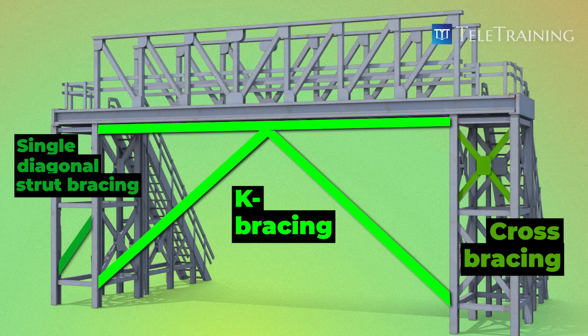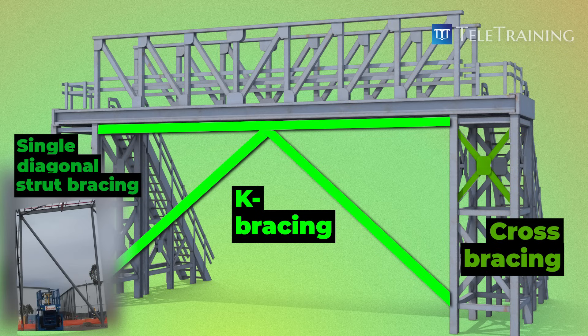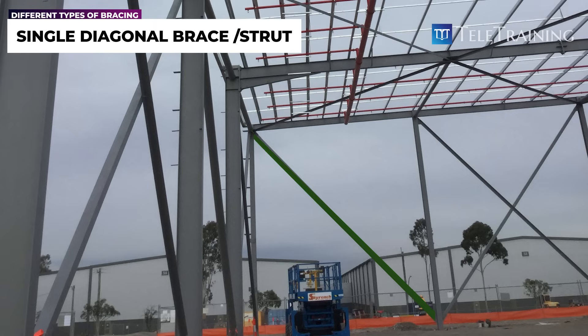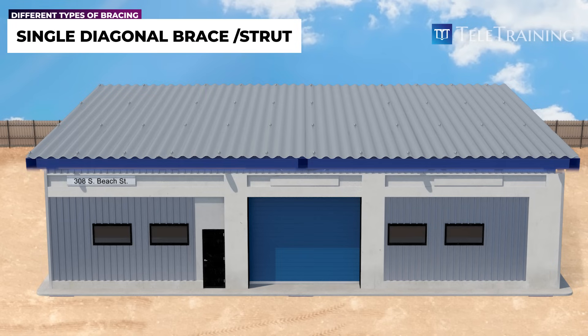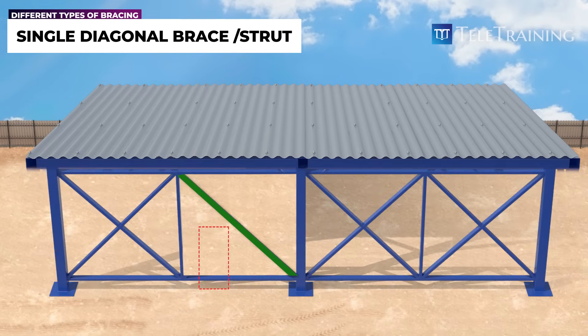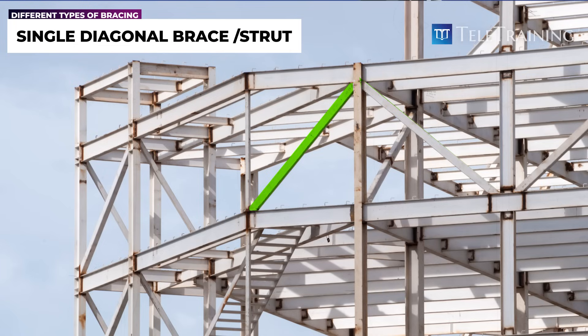An alternative to cross-bracing and the other common type of bracing is the single-diagonal brace or strut. Single-diagonal bracing has its own applications. For example, if an architect wanted to place a door here, a diagonal cross-bracing member would be in the way. With single-diagonal bracing, a single member is installed that is strong enough to resist lateral loads in both compression and tension.